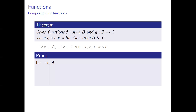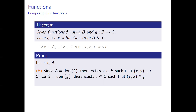Let x be an element of A. First, we show existence. Since A is the domain of f, there exists an element y in B such that the ordered pair (x, y) is an element of f. Since B is the domain of g, there exists an element z in C such that the ordered pair (y, z) is an element of g. Thus, the ordered pair (x, z) is an element of gf by the definition of the composite relation gf. This proves existence.